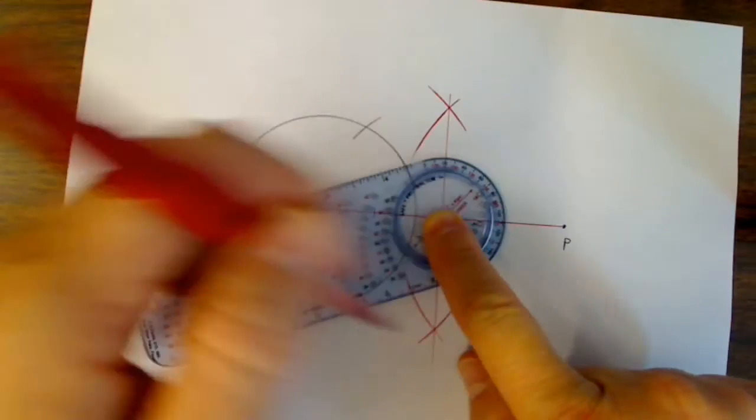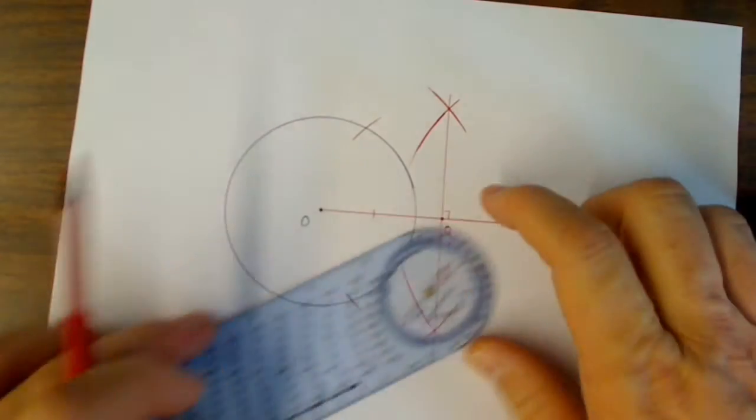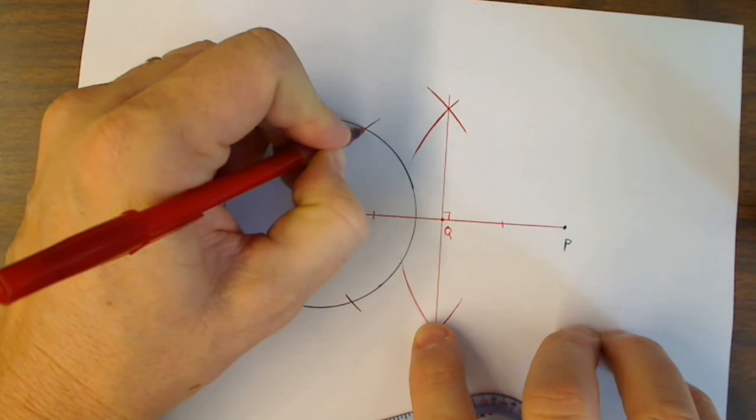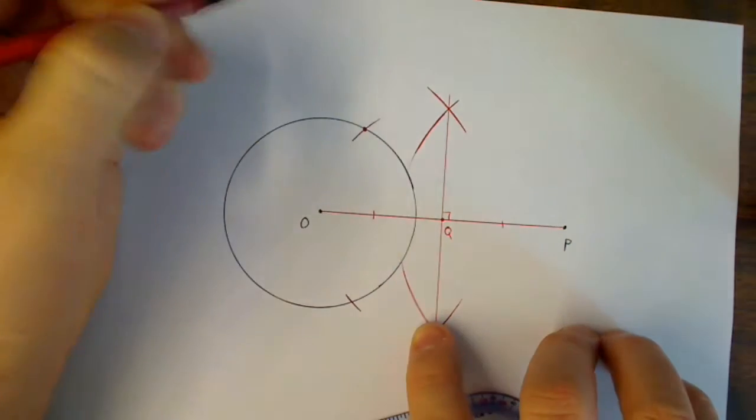If I wanted to, I could draw a whole circle. But I just don't need those lines in my way. Instead, I'm going to look at where that arc intersected my circle.